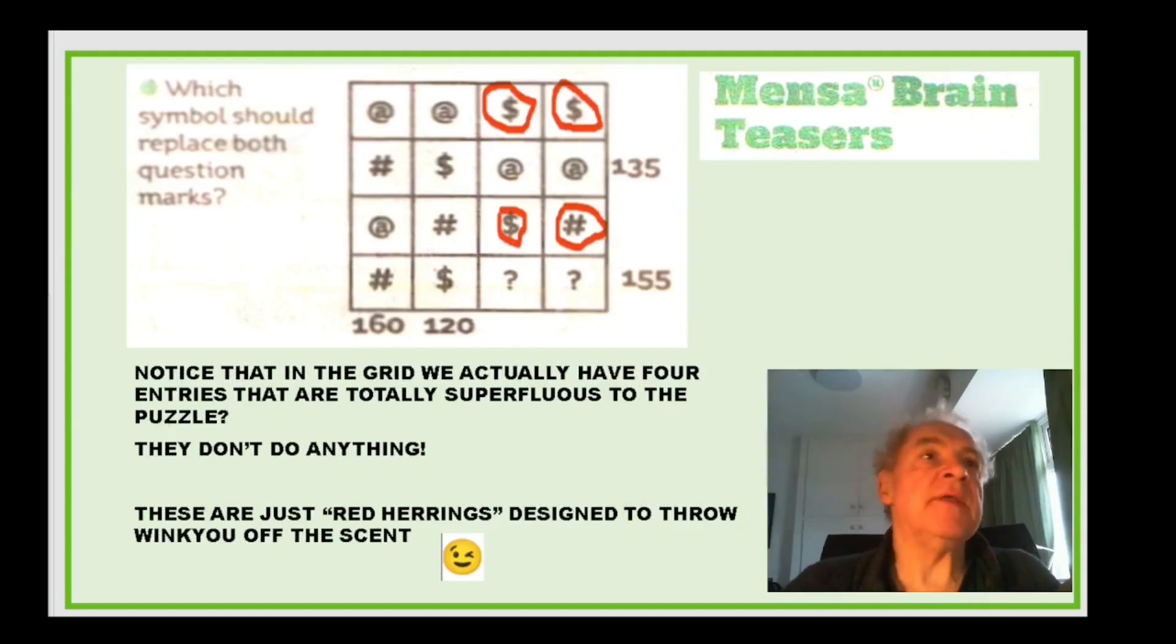Okay just a note here. These symbols you might wonder what these are doing because you've got these columns haven't you? And they add up to 160, 120. And this row adds up to 135. So that's doing something. And then this is like your punchline, you know what have you got to do? You know you're given 155. So what are these two question marks? So what do these symbols do? Well they don't do anything. They're red herrings.